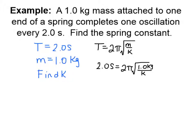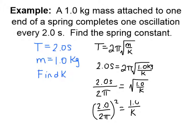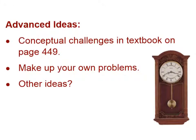It's pretty simple if we take our 2.0 seconds divided by 2 pi and of course that equals then the square root of 1.0 over k. Then if we square both sides that makes it a little bit easier to deal with the square root or gets rid of the square root 1 over k and we can solve then for spring constant. Here is 9.9 newtons per meter. Some advanced ideas, conceptual challenges in your textbook page 449, make up your own problems. Any other ideas you have would be great and I look forward to seeing you in class.